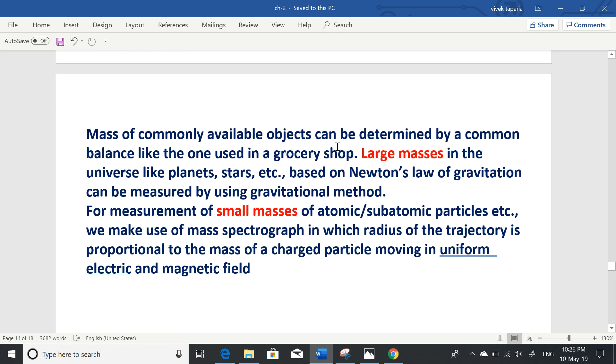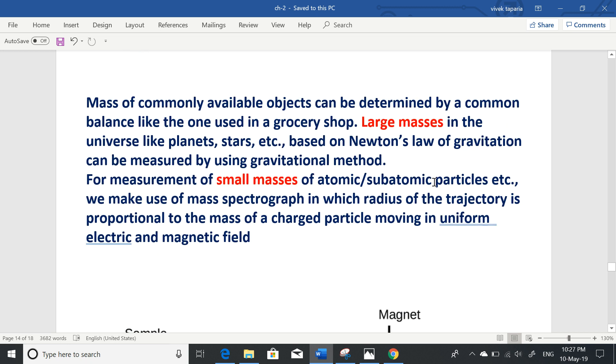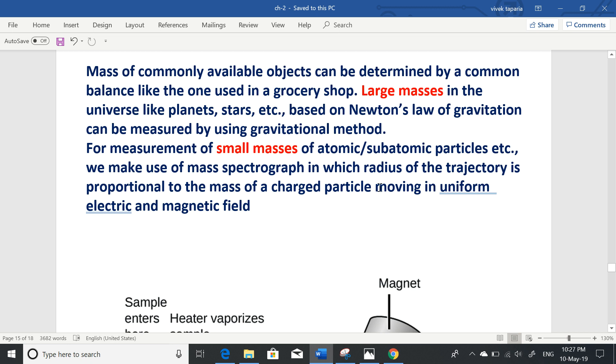Mass of commonly available objects can be determined by a common balance, like the one used in grocery shop. Large masses in the universe like planets, stars etc., we can use Newton's law of gravitation. Gravitational method. And for measurement of small masses, atomic or subatomic particles, we use mass spectrograph.